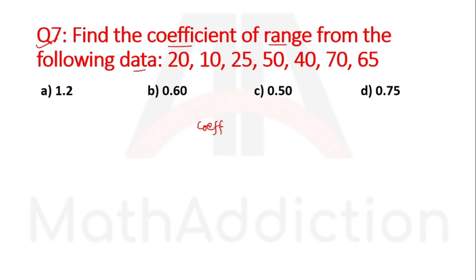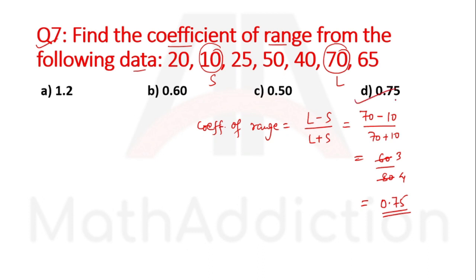The largest value is 70 and smallest is 10. So coefficient of range equals 70 minus 10 divided by 70 plus 10, which is 60 divided by 80, which equals 3 by 4 or 0.75. Option D is the right answer.